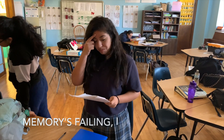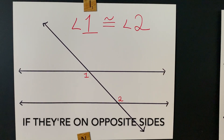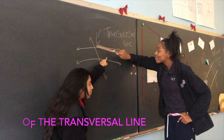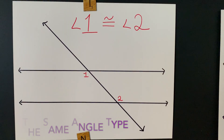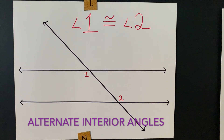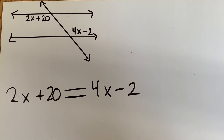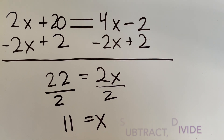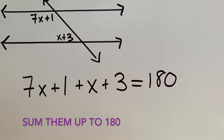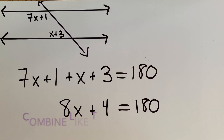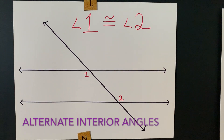My memory's failing, I could use some help with the right equation. Are they on opposite sides of the transversal line, the same angle type? Then you have alternate interior angles. Start with an equal sign, put one angle on either side, combine like terms, subtract the right to find alternate interior angles if they're all the same size.